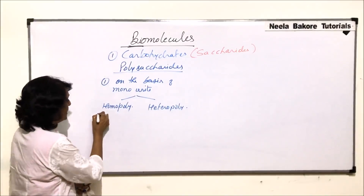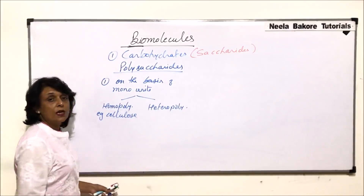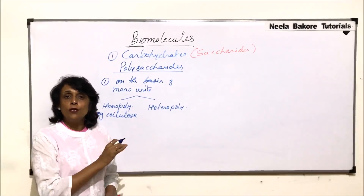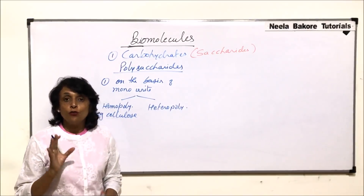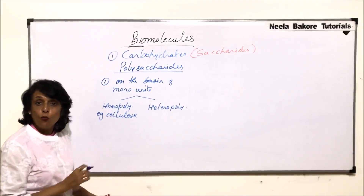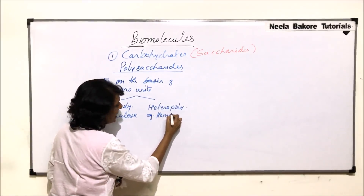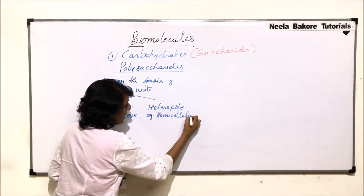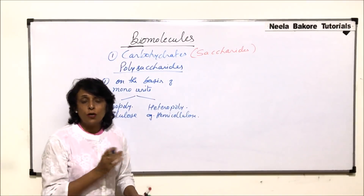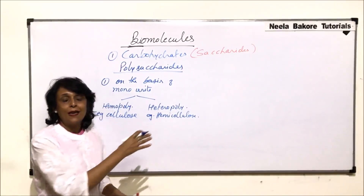For example, cellulose is a homopolysaccharide — it is made up of only glucose. So if the mono unit is only glucose and there are thousands of glucose molecules only, then that polysaccharide will be termed as homopolysaccharide. In the case of hemicellulose, it is made up of some units of glucose, some units of fructose, and some units of galactose — not exactly glucose, fructose and galactose.